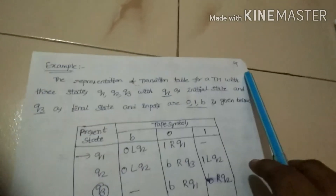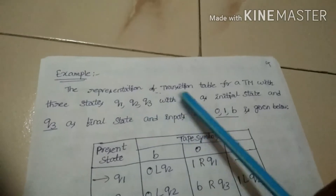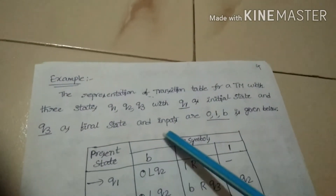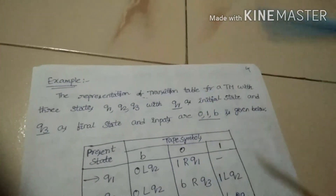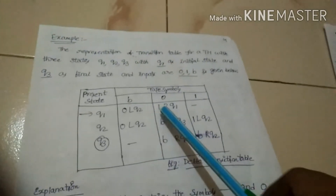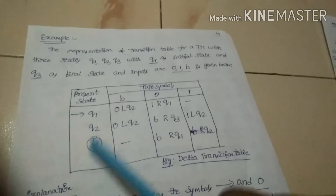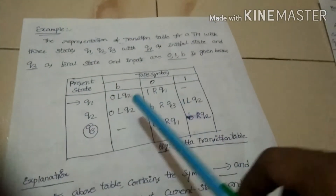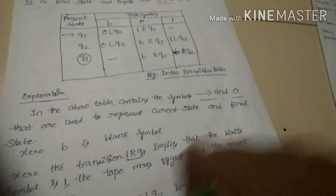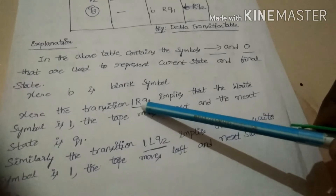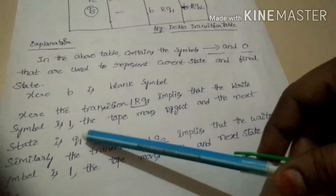Here is an example of the transition table — the representation of the transition table for a Turing machine with three states Q1, Q2, Q3, where Q1 is the initial state and Q3 is the final state. We take inputs 0, 1, and B. This is the delta transition table. The tape symbols are B, 0, 1, and the present states are Q1, Q2, Q3. The transition (1, R, Q1) implies that the written symbol is 1, the tape moves right, and the next state is Q1.